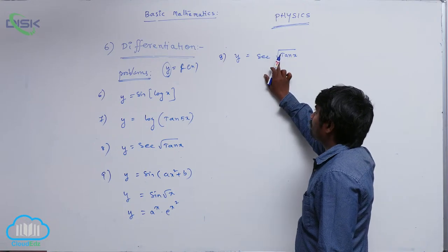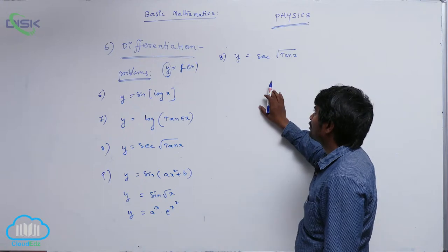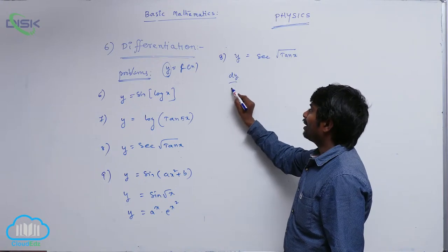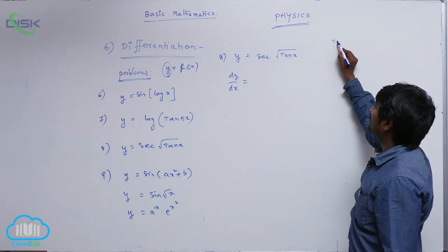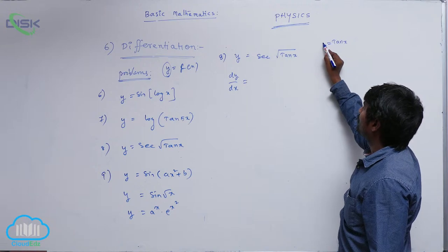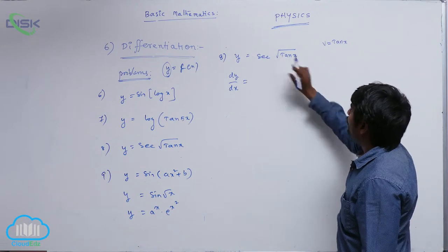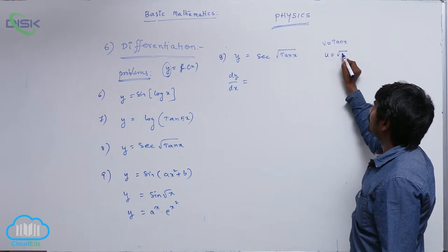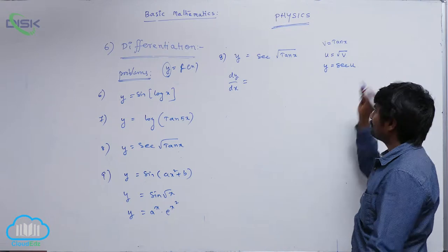I know secant x, but I do not know secant of root. So here, for dy by dx, I am going to take tan x as v, and root of v as u. So u is equal to root of v, and y is equal to secant u.